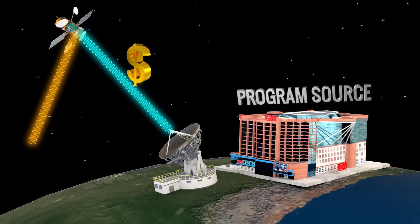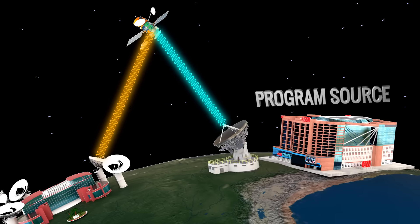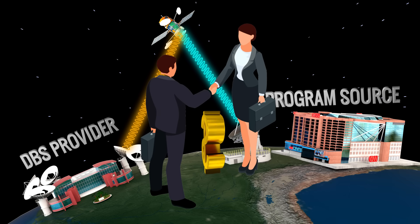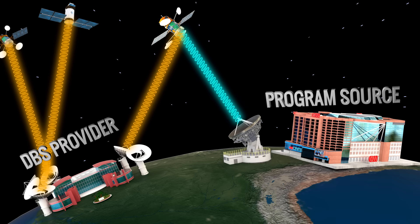Now the CNN signal is commonly available at one point, and any DBS provider can access the signal once they have made a business agreement with the program source. Similarly, the DBS provider collects signals from many such channels or program sources.